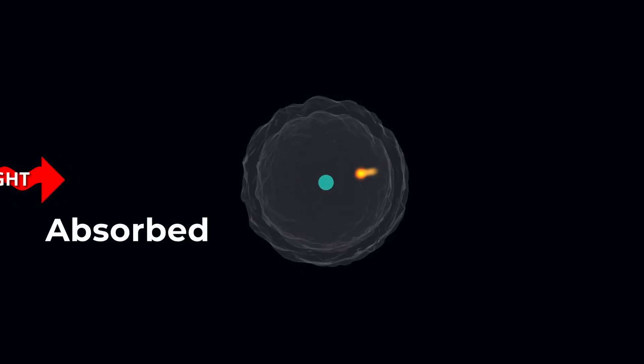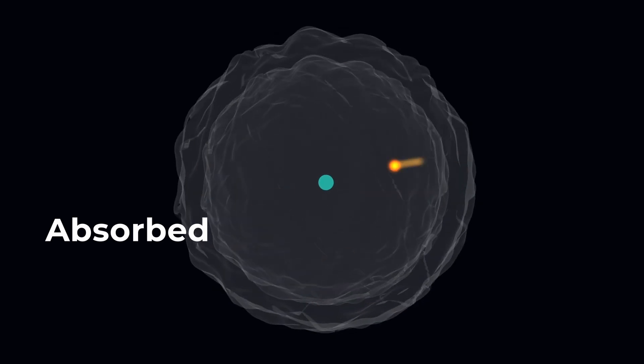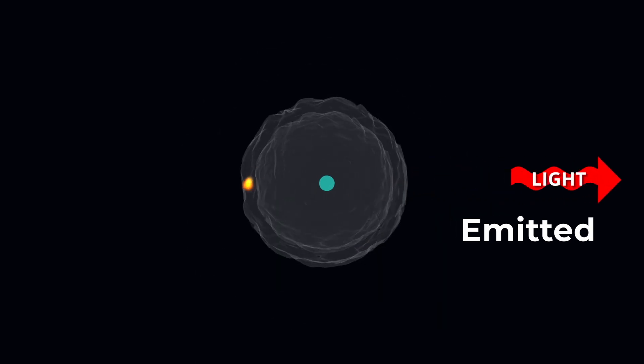In an atom, this energy is released in the form of light coming out of it. The exact amount of energy needed for an electron to absorb light and move to a higher energy level is the same amount of energy emitted as light to move to a lower energy level.